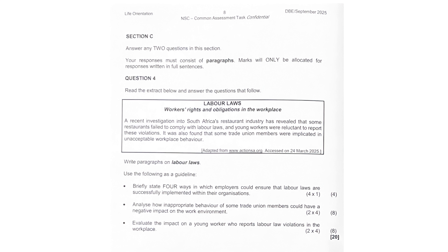Labor laws — briefly state four ways in which employers could ensure that labor laws are successfully implemented within their organizations. They can ensure that labor laws are followed by first educating and training staff and management on workplace rights. They can create clear workplace policies that comply with the BCEA. Organizations should establish grievance procedures so that workers feel safe to report unfair treatment. And they can conduct regular compliance audits before issues escalate.